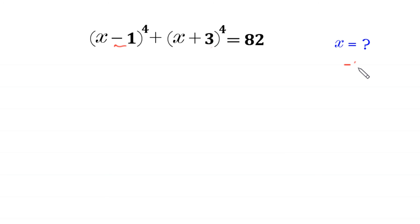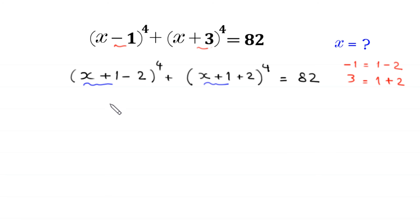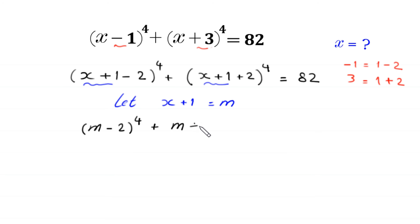The negative 1 can be written as 1 minus 2, and this plus 3 can be written as 1 plus 2. So we can rewrite this equation as (x plus 1 minus 2) whole to the power 4 plus (x plus 1 plus 2) whole to the power 4 is equal to 82. Now we suppose that x plus 1 is equal to m.